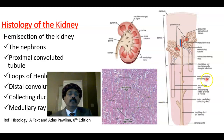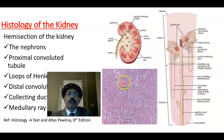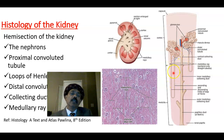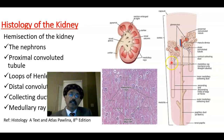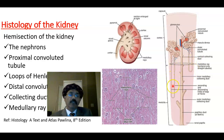In a section at the juxtamedullary area, just the lower part of the medulla, we get the medullary rays. Medullary rays are composed of the collecting duct going down, plus the descending and ascending limbs of the loop of Henle — the thick descending limb, the thick ascending limb, and the thin segment of the loop of Henle. These straight structures around the collecting duct form the medullary ray.